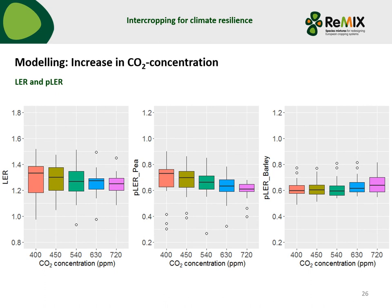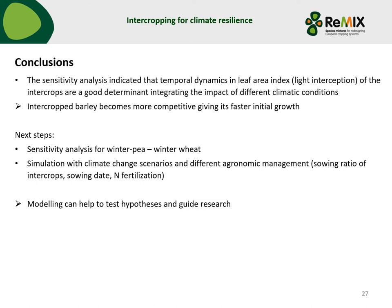Finally, looking at the results for an increase in CO2 concentration, the LER is more or less stable across different concentrations with a slightly decreasing trend, mostly due to a decreasing trend for the partial LER of pea. Barley was quite stable under 540 ppm and then showed an increasing trend. This could be well related to the leaf area index and light interception, as barley has faster initial growth, which is stimulated by higher CO2 concentration, giving it a latent advantage for light interception. In summary, the sensitivity analysis indicated that the temporal dynamics of the leaf area index, which determined light interception to a large degree, was a good determinant integrating the impact of different climatic conditions.